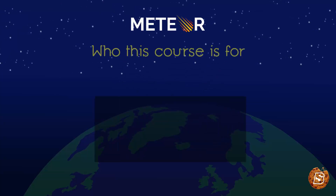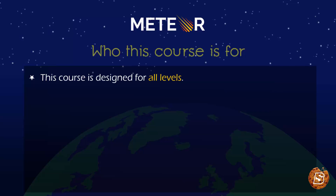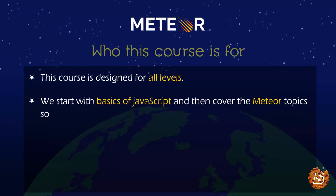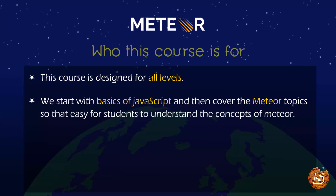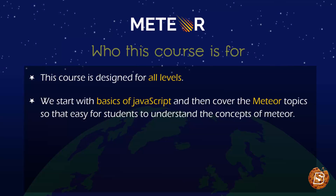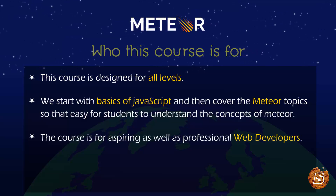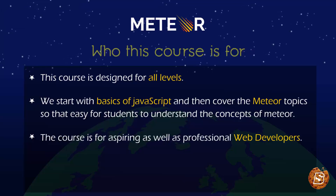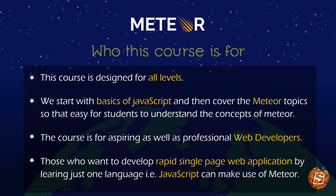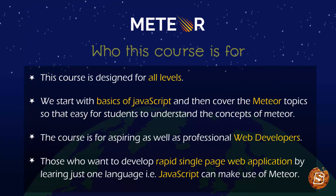Now, who is this course for? This course is designed for all levels. Even if you are a novice in JavaScript, you can start with Meteor. We basically start with the basics of JavaScript and then cover the Meteor topics so that it's easy for students to understand the concepts of Meteor. The course is for aspiring as well as professional web developers who want to develop rapid single-page web applications by learning just one language — JavaScript — using Meteor.